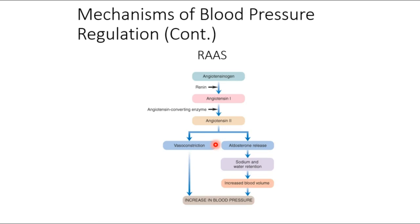The adrenal cortex releases aldosterone, which causes sodium retention. Because you retain sodium, you also retain water. Aldosterone also causes secretion of potassium, which will matter later. Aldosterone release leads to sodium and water retention, which increases blood volume and therefore increases blood pressure.